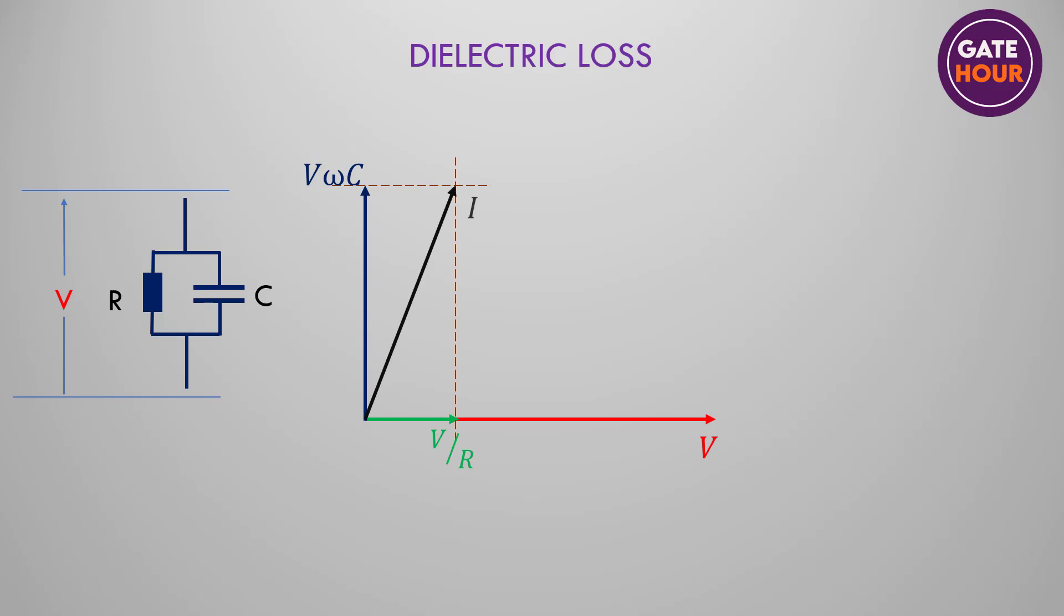We can now find the phasor sum of these two currents to get the net current that flows through the cable. We can see that the net current makes an angle phi with the voltage phasor and an angle delta with the capacitor current phasor. This angle delta is known as the dielectric loss angle.